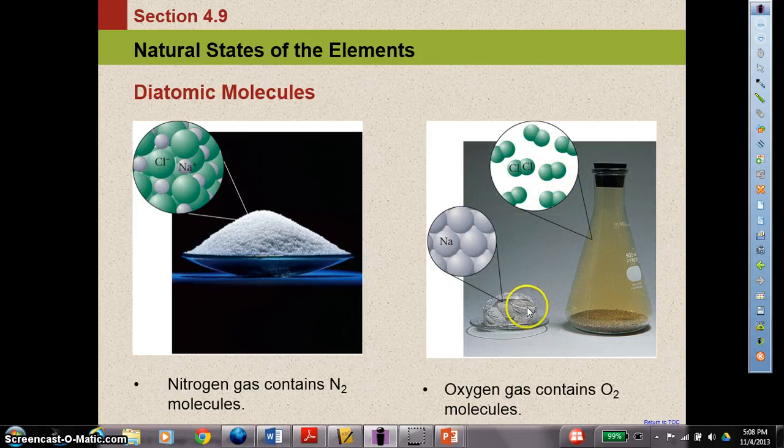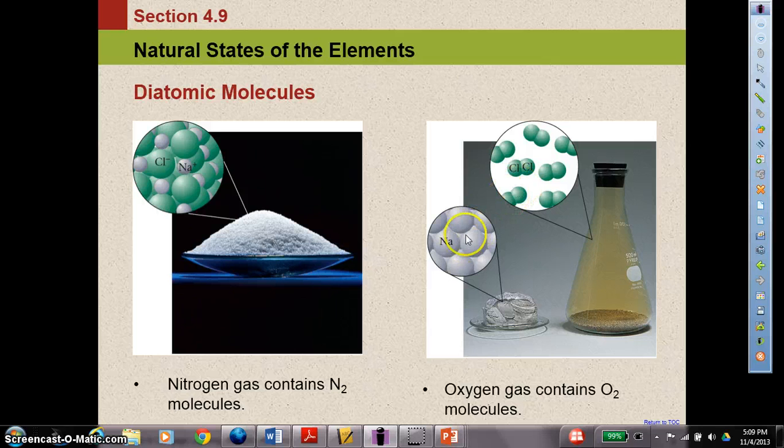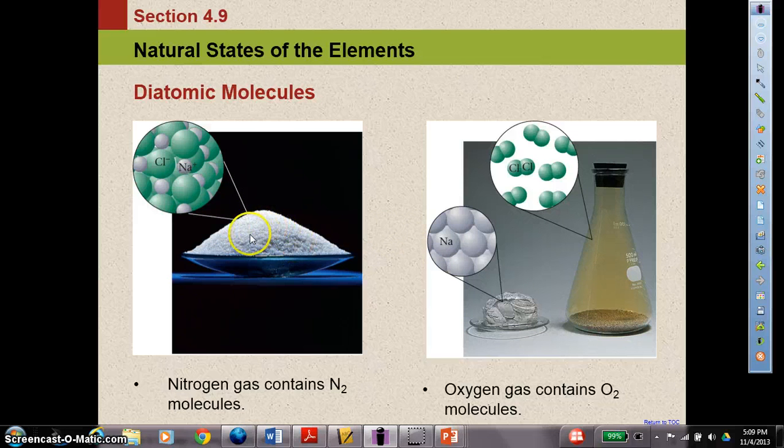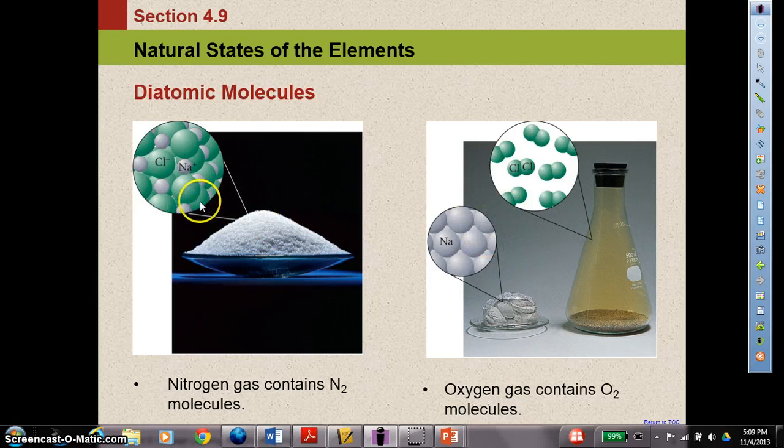If I were to open this and these two were to react together, what would happen is the chlorines would come apart, and they actually would accept an electron from a sodium atom. Each one would, and it would cause an ionic compound to be formed. This ionic compound over here, if you notice, is something pretty common, and it's called table salt, and you eat that on a daily basis, but it started off as the sodium metal that's explosive in water and chlorine gas that if you inhaled it, it would kill you, and through a chemical process forms sodium chloride.